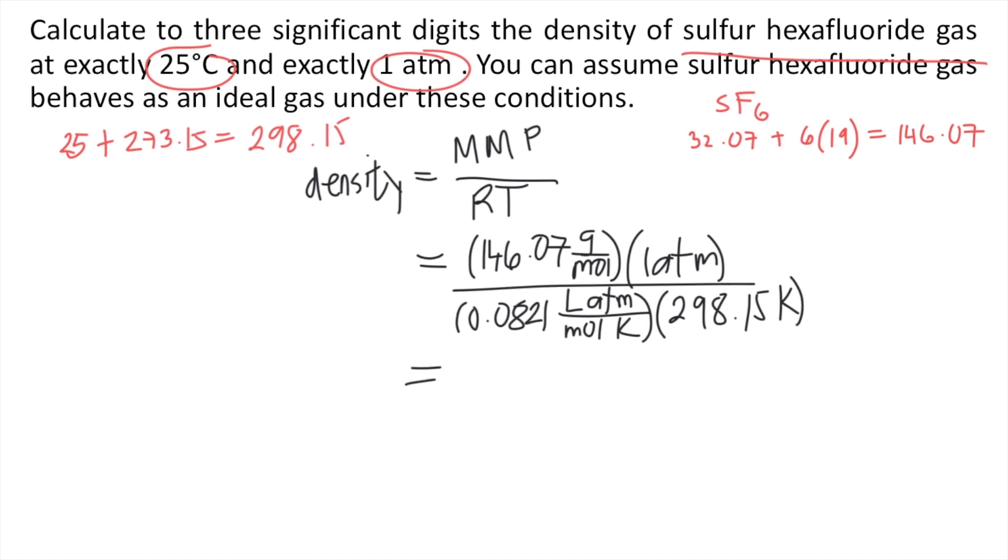So let's see how the units cancel out. So the ATMs would cancel out. The moles would cancel out. The kelvins would cancel out. So the unit for density is grams over liters.